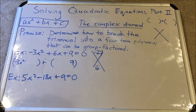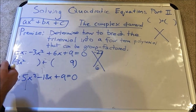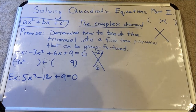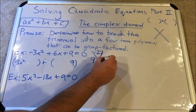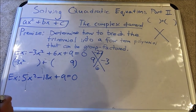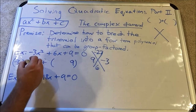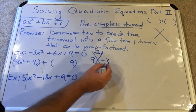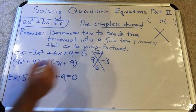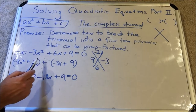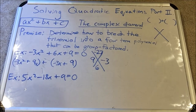We need two numbers that multiply to −27 and add to 6. One must be negative and one positive. Thinking of factor pairs of 27: try 9 and −3 — those add to 6 and multiply to −27. The order doesn't matter. So we place +9x in the second spot of the first parentheses and −3x in the first spot of the second parentheses, with a plus sign connecting them. That's how 6x broke up into 9x and −3x.